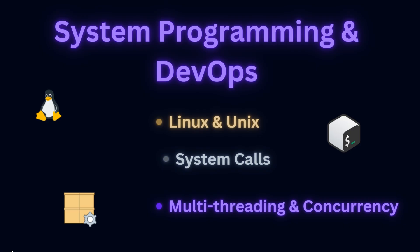In bash scripting, automate repetitive tasks — write scripts to automate deployments, database backups, and system monitoring. Also learn networking and security: understand how the internet works, learn TCP/IP protocols, HTTP, DNS, firewalls, encryption, and authentication to build secure apps. Learn about CI/CD — continuous integration and deployment — along with Docker and Kubernetes to deploy applications in containers instead of running them manually.